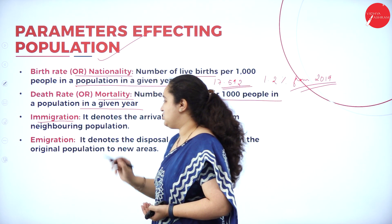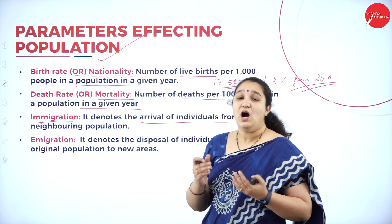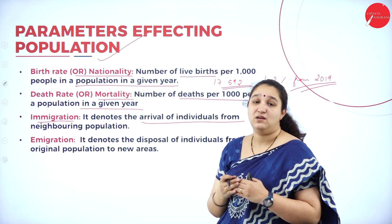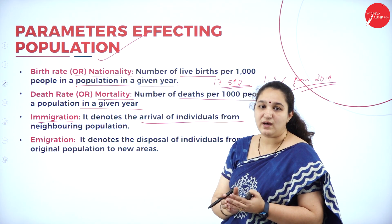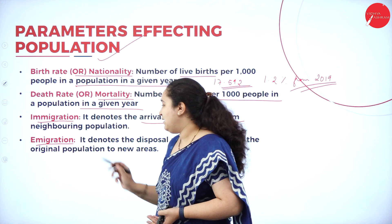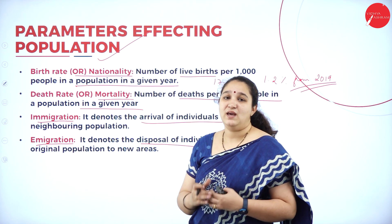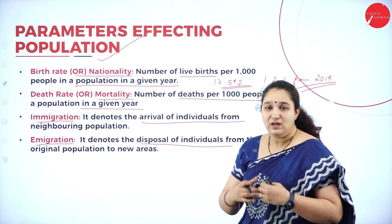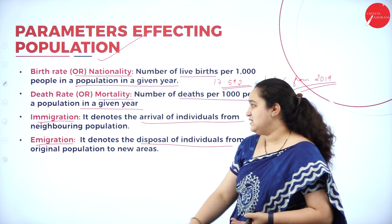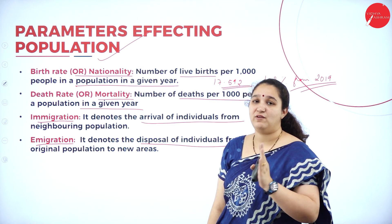Next is immigration. Immigration denotes the arrival of individuals from a neighboring population — how many people of a different nationality have arrived to India to live. That is immigration. Next is emigration, which denotes the dispersal of individuals from the original population to new areas — how many Indians, like NRIs, have left and moved to a different area. These are the four parameters affecting population: birth rate, death rate, immigration, and emigration.